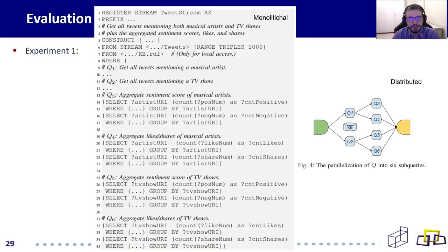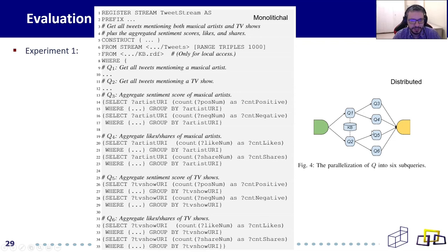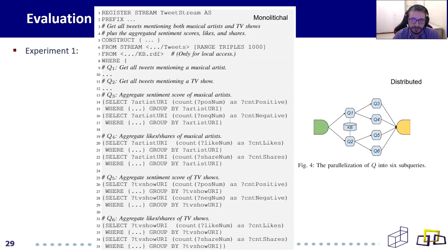In experiment one, on the left side of the table is the monolithic version of the query, and on the right side is the distributed version. This is the same query with the same results, but on the right there is an operator network where we managed to parallelize some parts of the monolithic query. It is important to say that in our tests, each operator on the network was run in a Docker container, so each operator is a different Docker container.